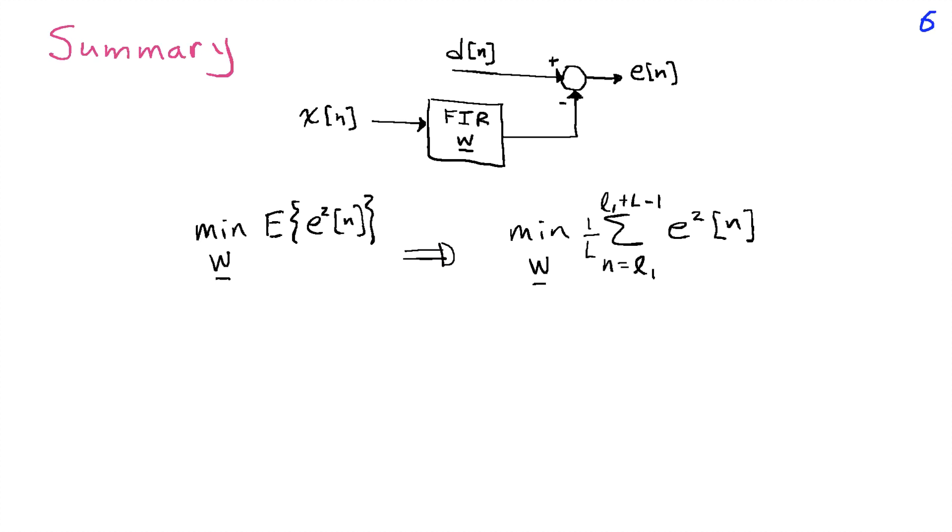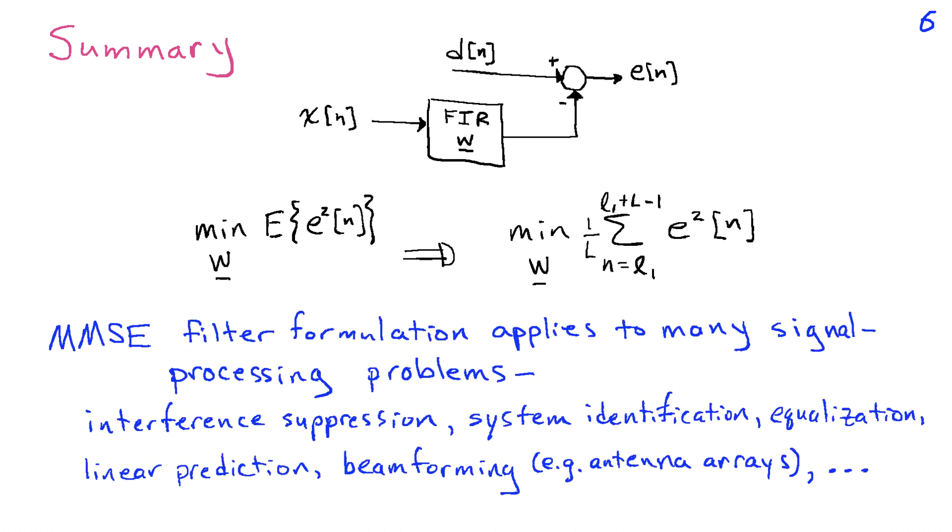So in summary, we're looking at a general problem of the form where we have a signal D of n and another signal X of n. We're going to pass X of n through an FIR filter and design our filter coefficients so that the output of the filter approximates D of n as close as possible. So that means we're going to try to find W to minimize the mean squared error, or in an approximate sense using data that we can actually measure, we're going to minimize the average over some interval.